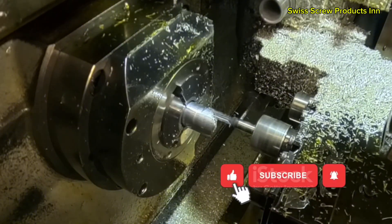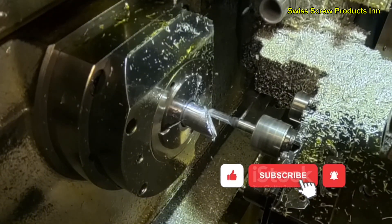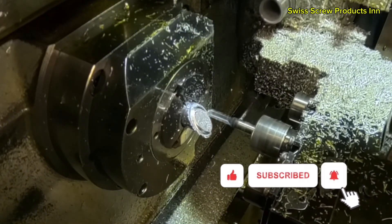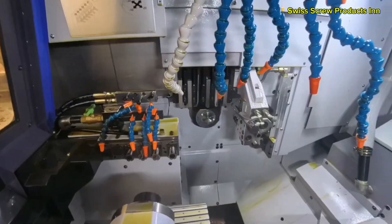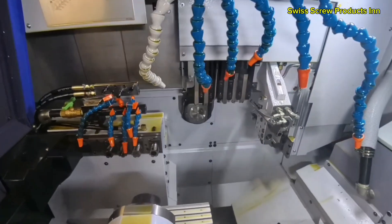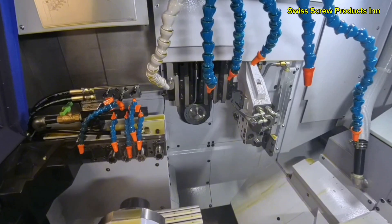Now, let's talk axes. Standard CNC lathes typically move in X and Z, but Swiss machines often operate with seven, nine, or even 13 axes. Each axis gives the machine another dimension of movement.